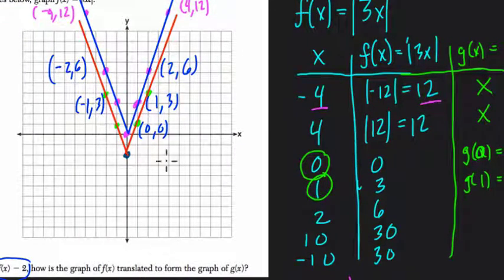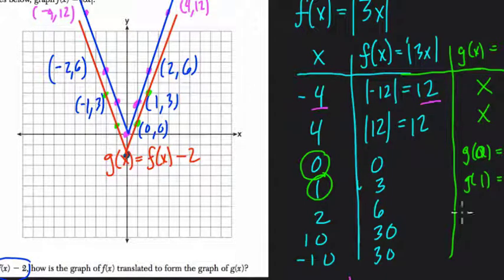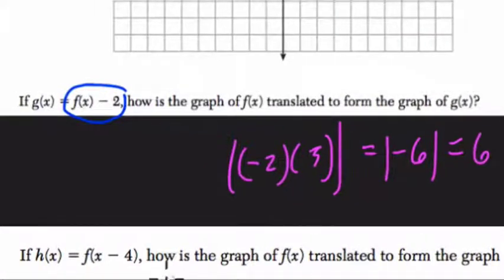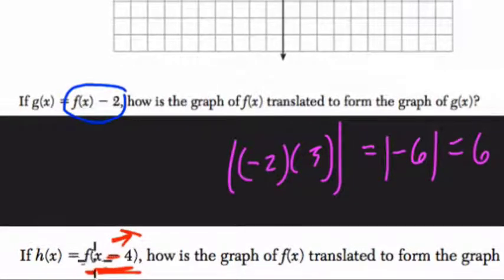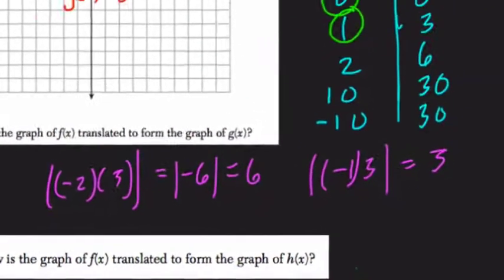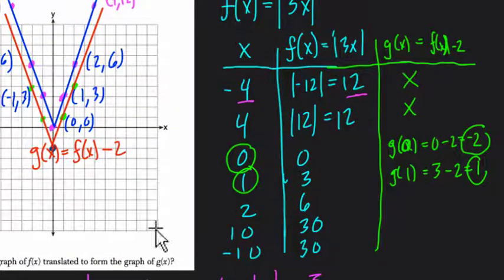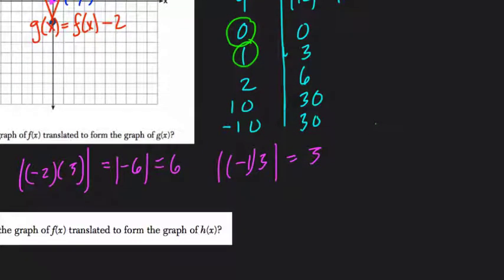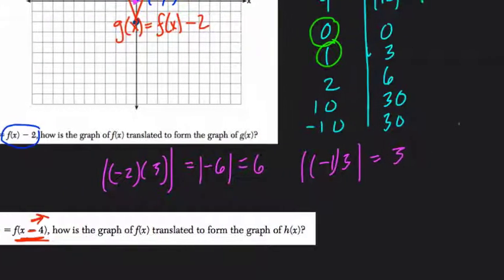You could say: when G(x) equals F(x) minus two, it shifts our graph down by two. Now we have H(x). H(x) equals F(x minus four). This is actually going to shift our function to the right four. Subtracting inside the parentheses shifts to the right four — and you can show it in your table. Let me clear off my G(x) column and confirm: H(x) equals F(x minus four).